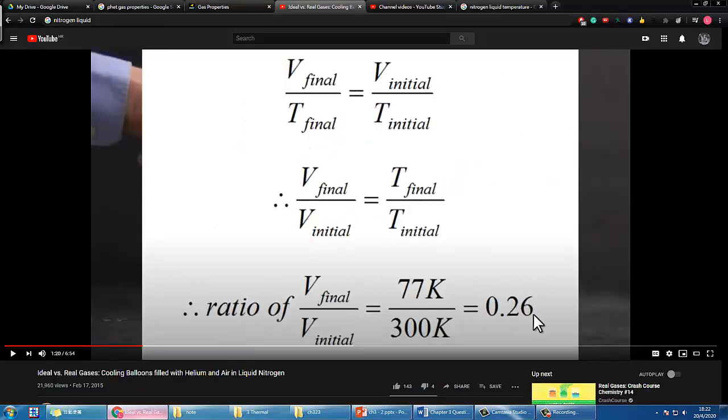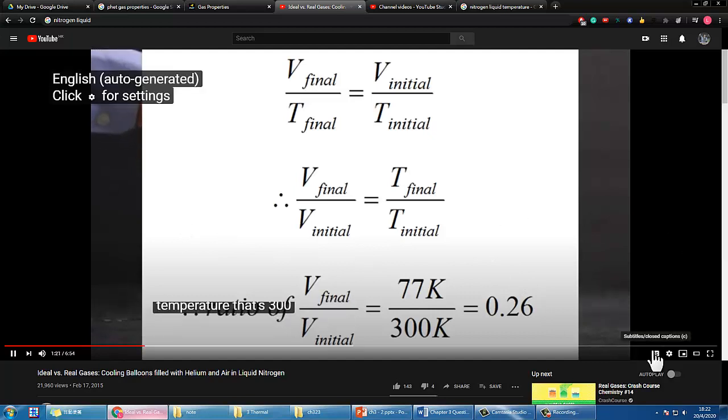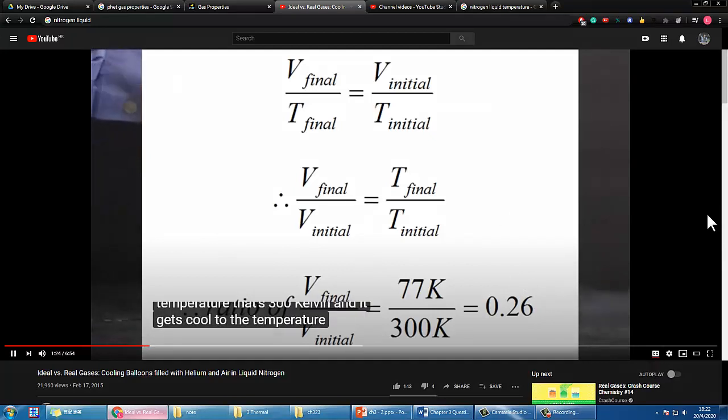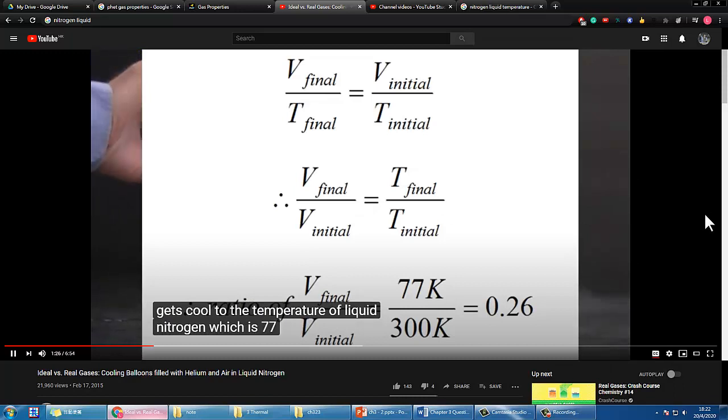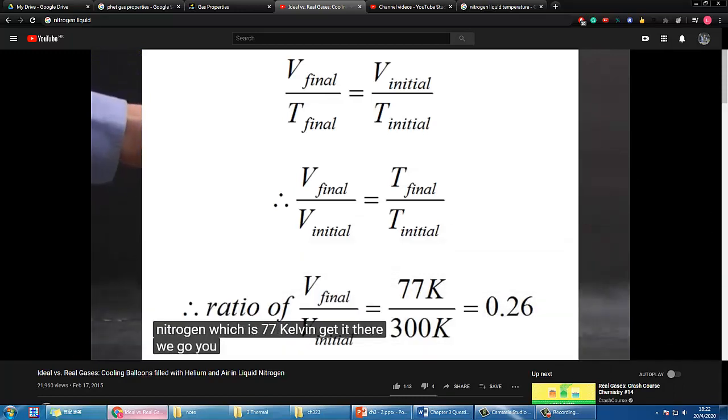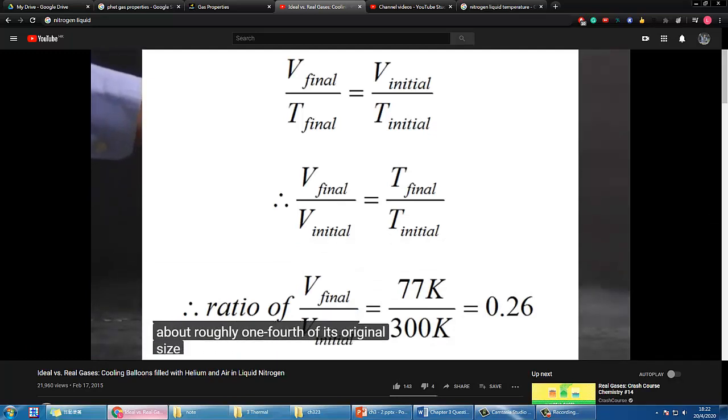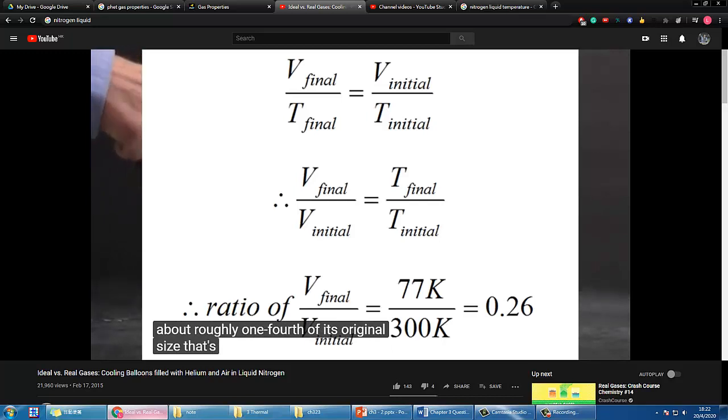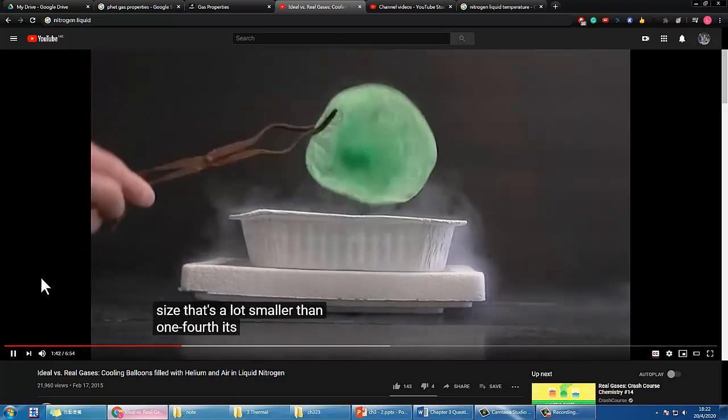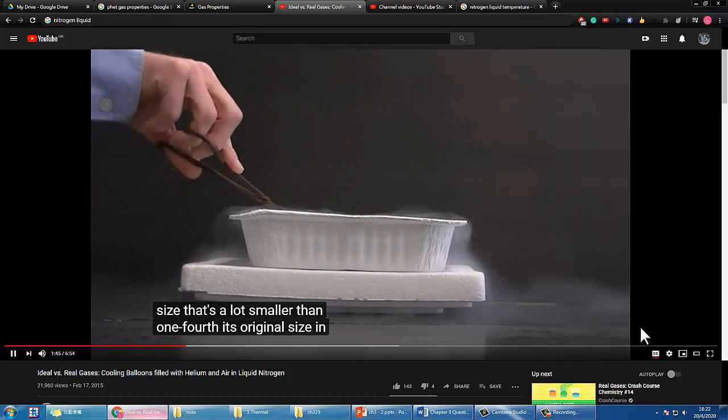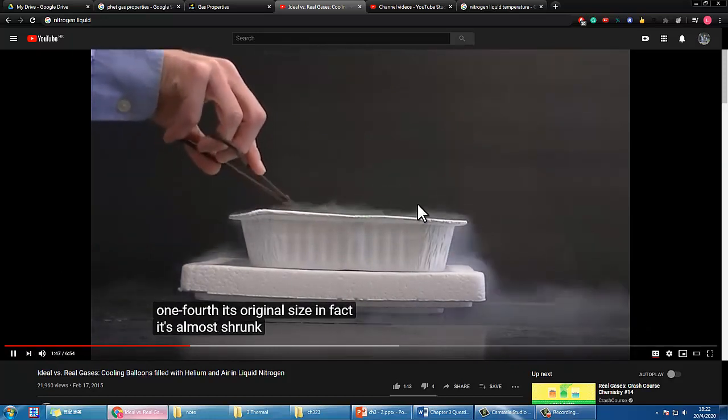And I suppose this is roughly what he also calculated as well. Let's continue - gas at room temperature that's 300 Kelvin gets cooled to the temperature of liquid nitrogen which is 77 Kelvin. You do a calculation and you'll find that the balloon should shrink to about roughly 1/4th of its original size. That's a lot smaller than 1/4th of its original size. If you look at the balloon it's almost shrunk to zero volume is what it looks like.